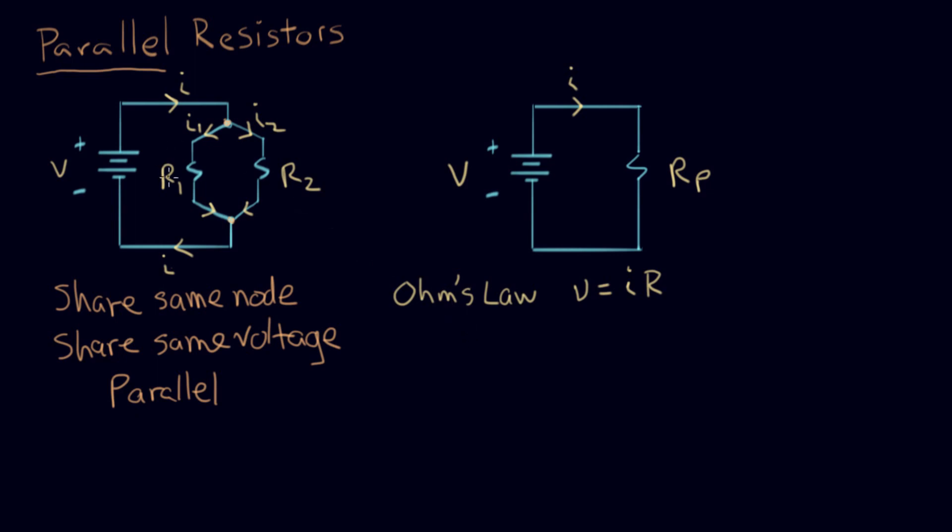So let's write down Ohm's Law for R1 and R2. We know the voltage, we'll just call it V. This is for R1: V equals I1 times R1. And for R2 we can write a similar equation: V equals I2 times R2. Now there's one more fact that we know, and that is that I1 and I2 add up to I. These are the three facts that we know about this circuit.